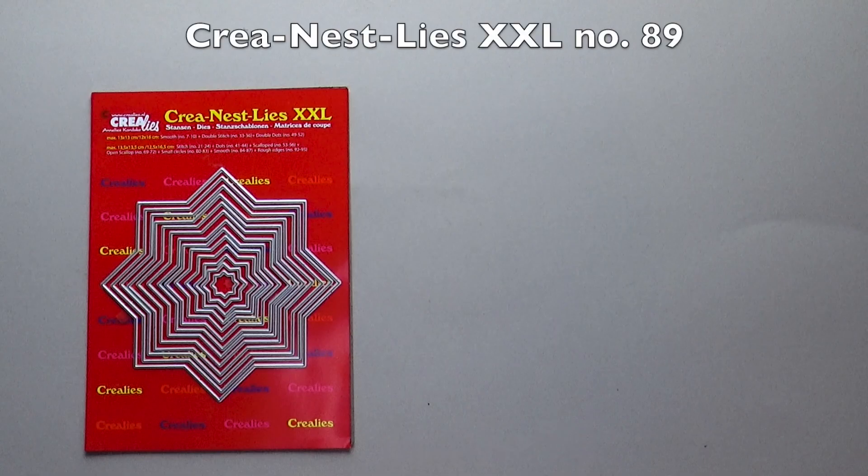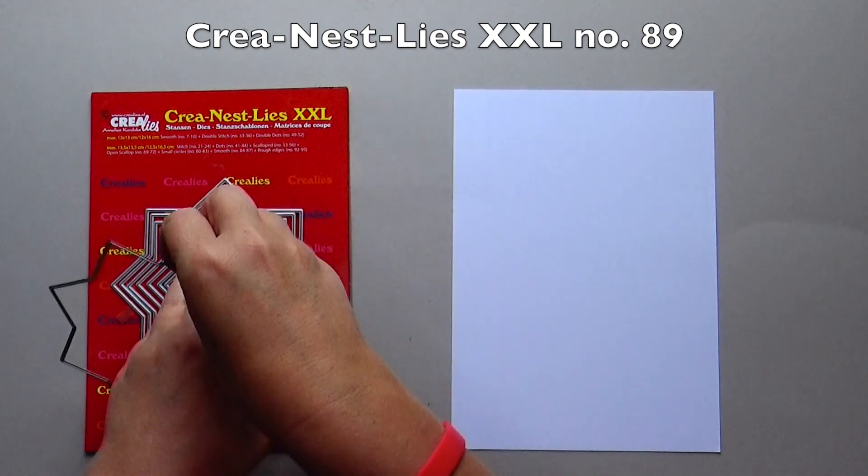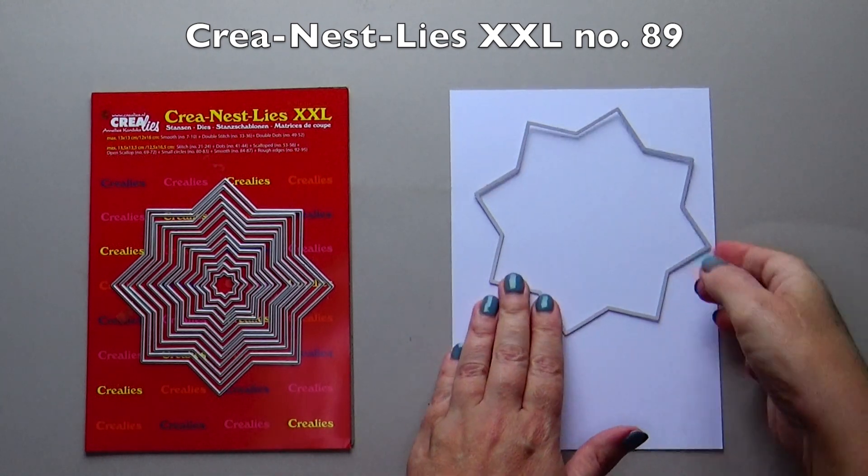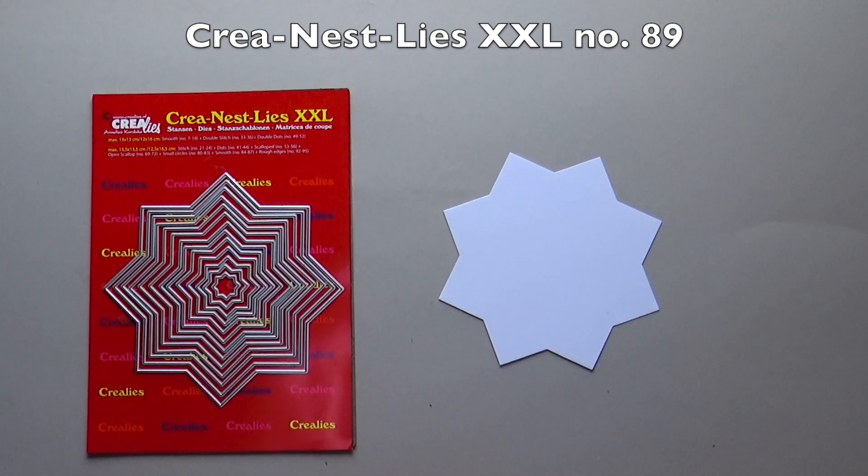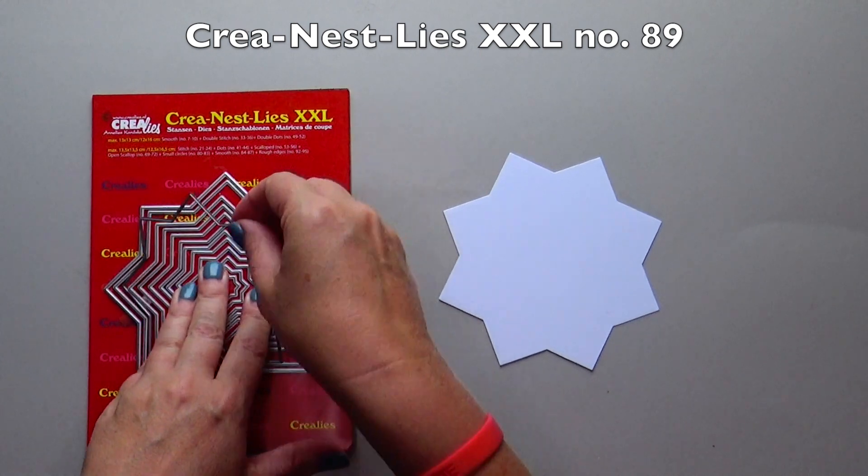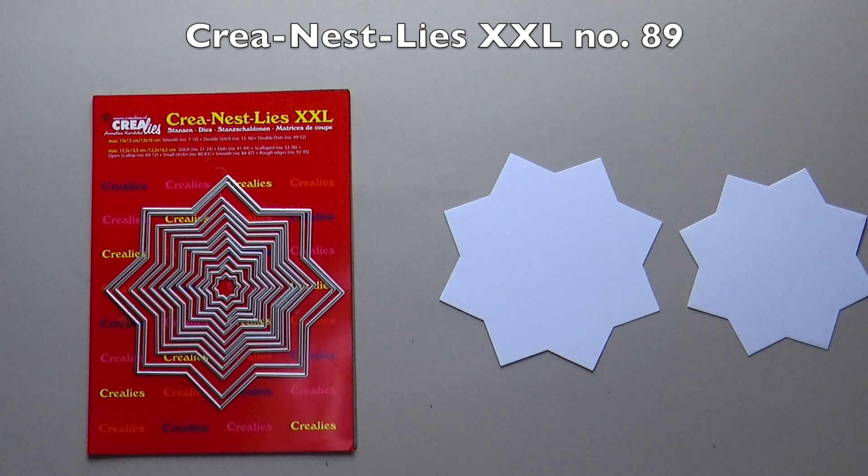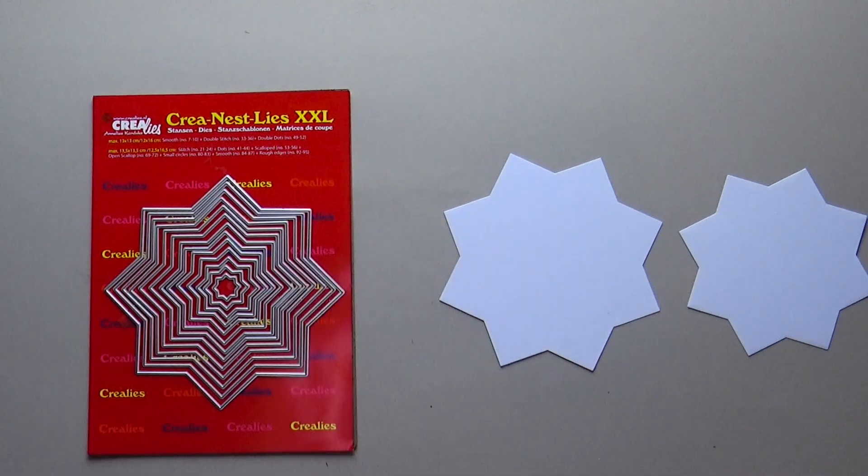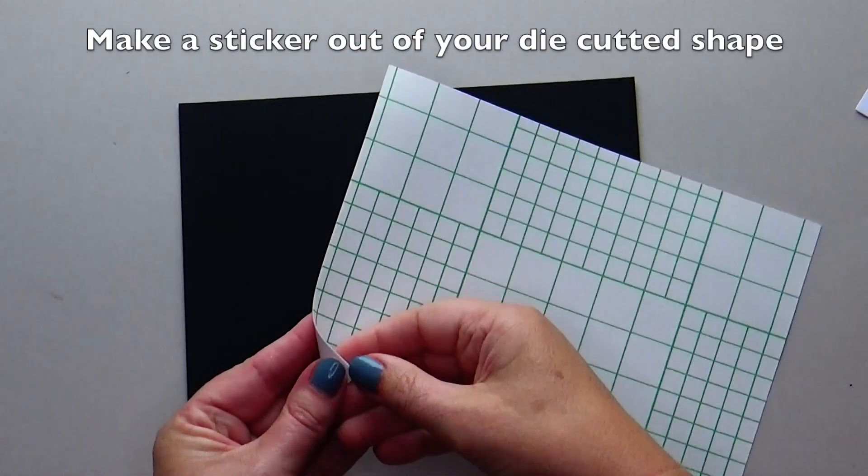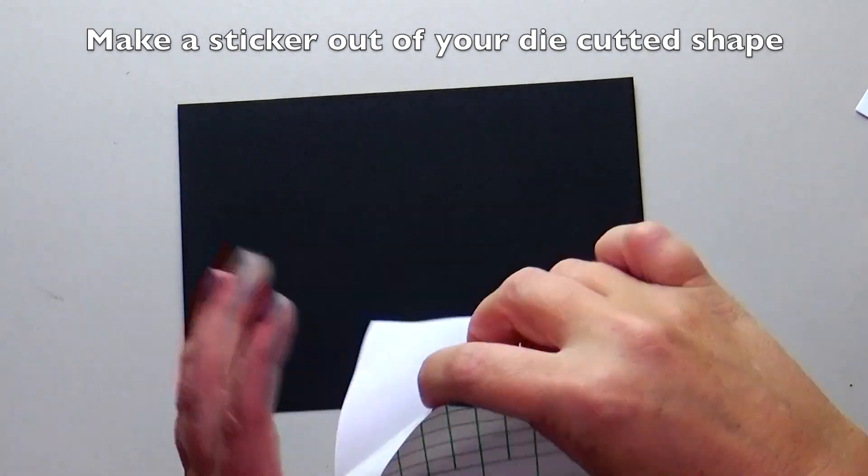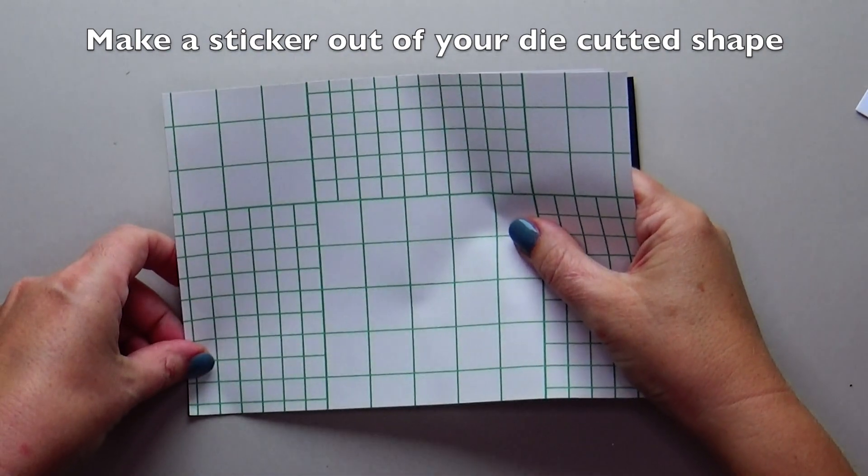Crea-Nest-Lies XXL number 89 is the 8-pointed star. Use the largest die to cut a star out of white cardstock. Use the third die counted from the outside to make a smaller star. Stick Crealies make a sticker out of your die-cut shape behind colored cardstock.